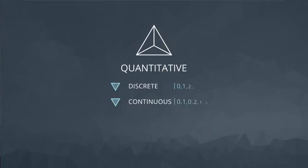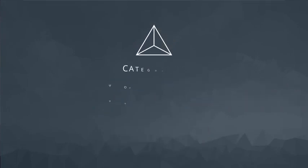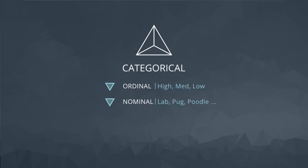To summarize, we have two main data types, each with two subgroups. Quantitative data can be divided into continuous and discrete. Categorical can be split into nominal and ordinal. Identifying data types is important as it allows us to understand the types of analyses that we can perform and the plots that we can build.